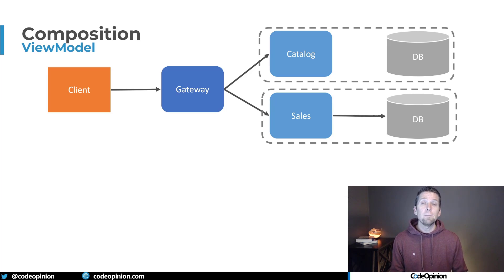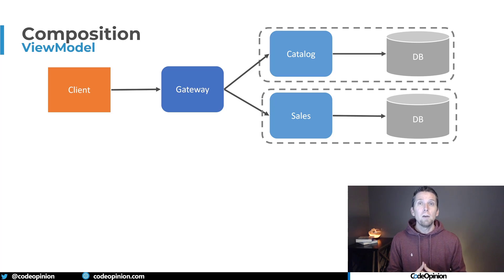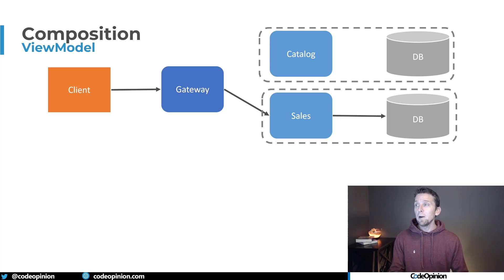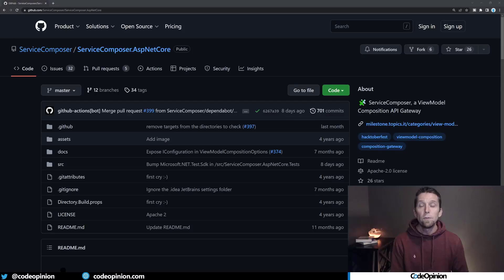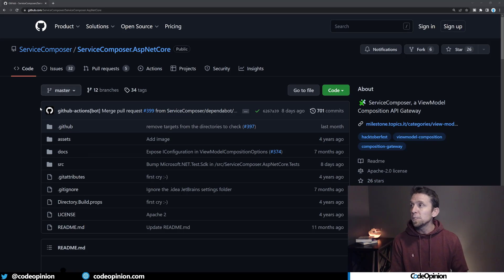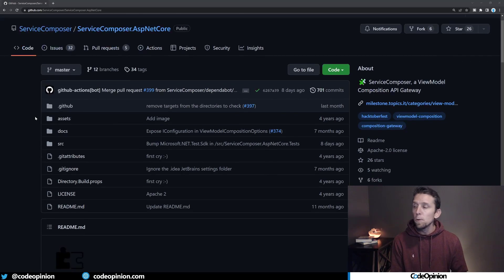Each service is responsible for its portion of composing the view model, and the gateway just merges everything together and returns it back to the client. If you want to see how this works in ASP.NET Core, you can use something like Service Composer.